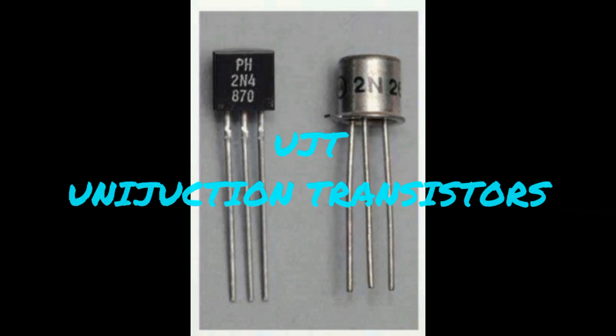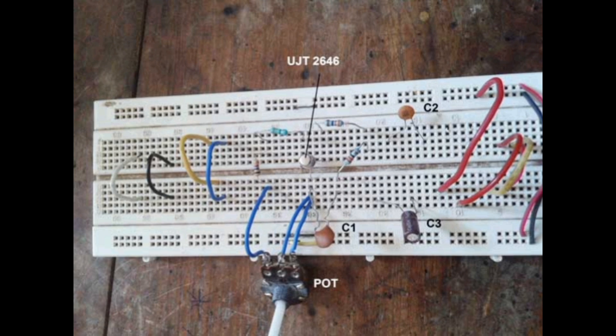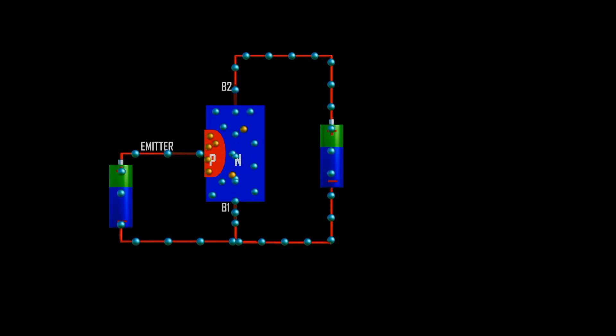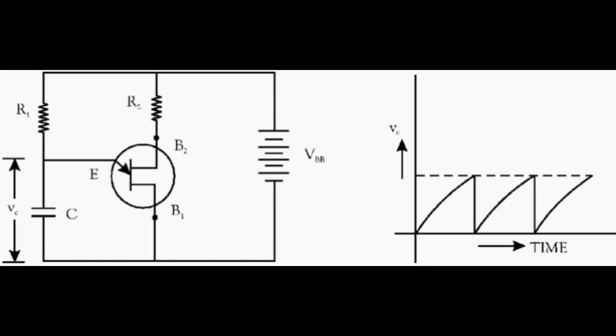UJT stands for unijunction transistor. This is one of the most important devices that can never be ignored. It is a three terminal semiconductor device. The main characteristic of UJT is that when it is triggered, the emitter current increases, regenerating until it is limited by the emitter power supply. Due to this characteristic feature, it is used in applications like switching pulse generators and sawtooth wave generators, among others.